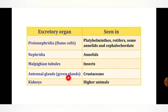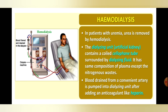Hemodialysis is the process where urea is removed from the patient's blood using a dialyzing unit also called an artificial kidney. It has a cellophane tube and dialyzing fluid. The dialyzing fluid has the same composition as blood plasma except it lacks nitrogenous waste.